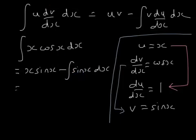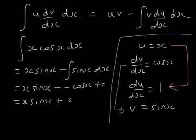So we're going to get x sin x, and the integral of sin x is minus cos x. So we've got two minuses, so it's x sin x plus cos x plus c.